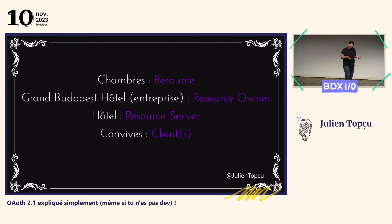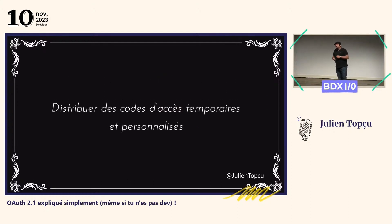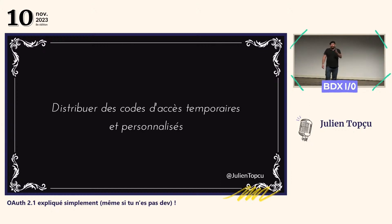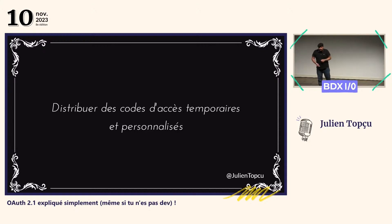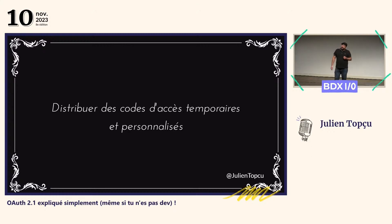Comment faire pour résoudre ce problème de révocation ? La solution est assez simple : on se dit, pourquoi pas distribuer des codes d'accès temporaires et personnalisés. Personnalisés, ça veut dire que chaque convive a son propre code, donc il va être facile de révoquer l'accès d'une personne sans impacter les autres. Et temporaire parce qu'on aimerait qu'une fois que le convive libère sa chambre, il n'ait plus accès à l'hôtel pour éviter ce problème de squatteur.